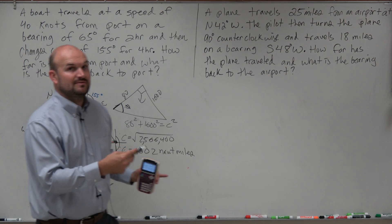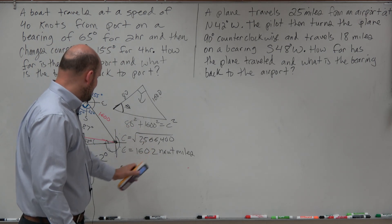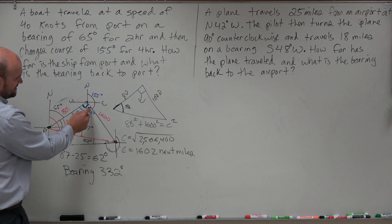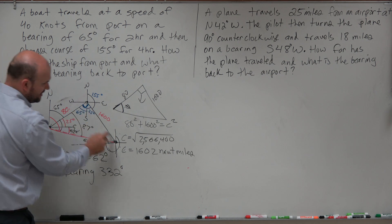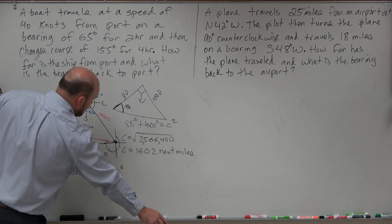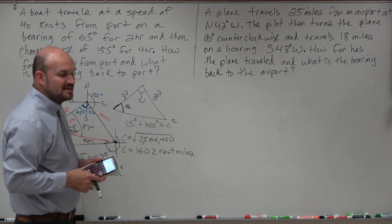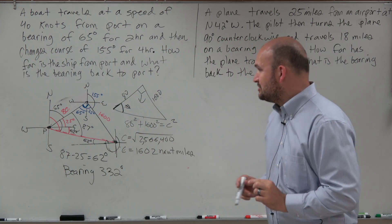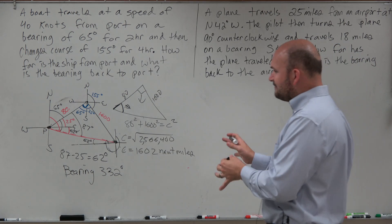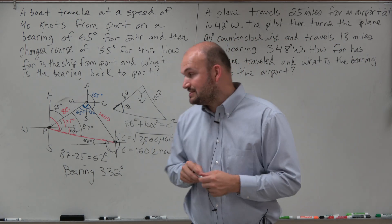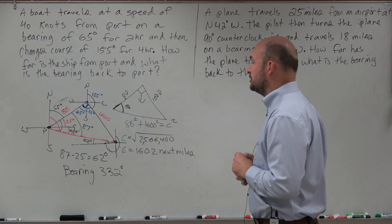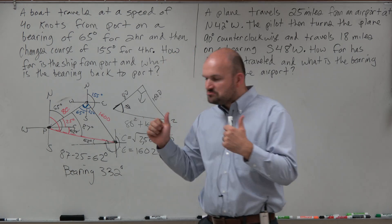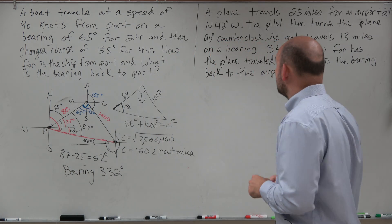Note that 360 degrees would take you all the way back to due north. My graph isn't drawn perfectly — the 1,600-mile leg is much longer than shown — but the mathematics looks good.